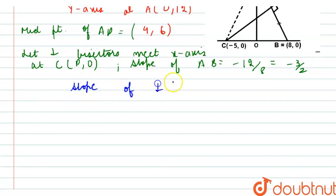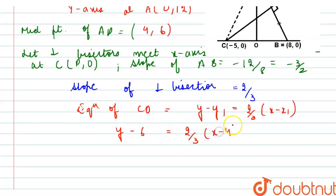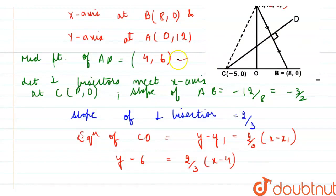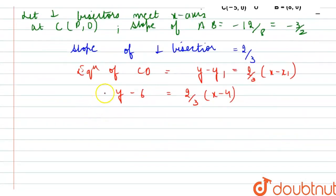Therefore, slope of perpendicular bisector is minus 1 upon M, so it would be equal to 2 upon 3. Now, equation of line CD would be y minus y1 equals its slope, that is 2 by 3, into x minus x1. We have used the midpoint (4, 6) to find the equation of CD.